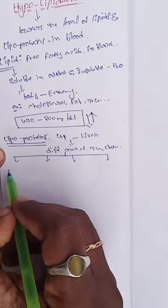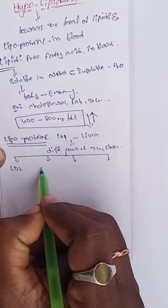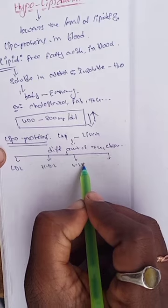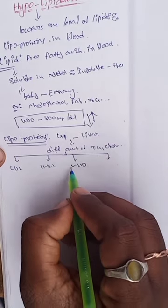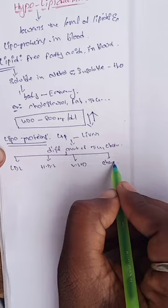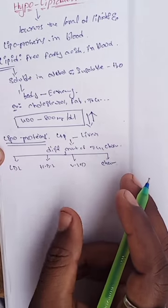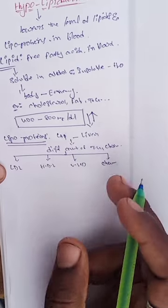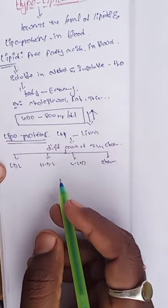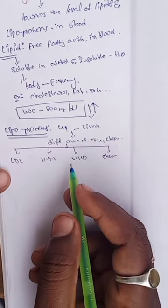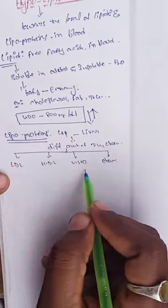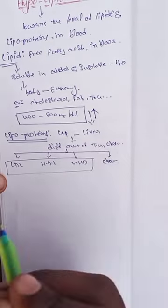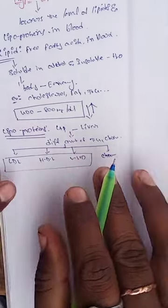The types of lipoproteins are: Low Density Lipoproteins (LDL), High Density Lipoproteins (HDL), and Very Low Density Lipoproteins (VLDL). Depending upon the density, lipoproteins are divided into these three main types.